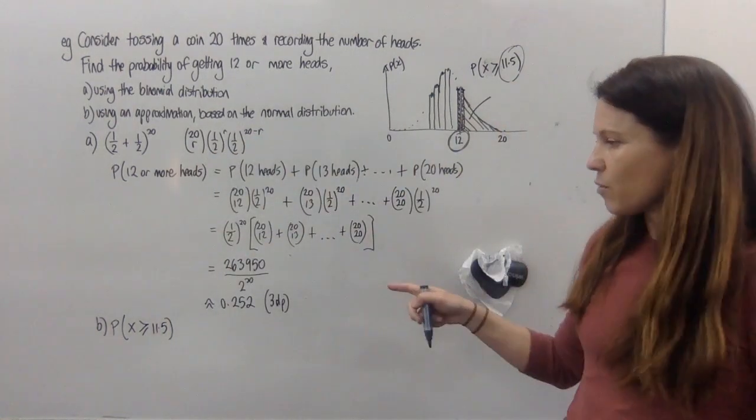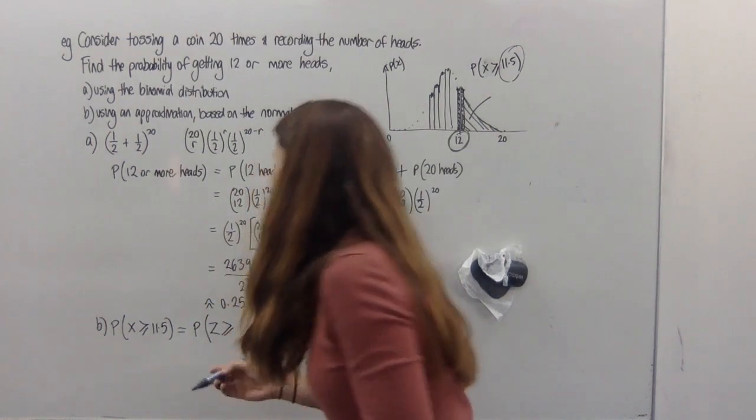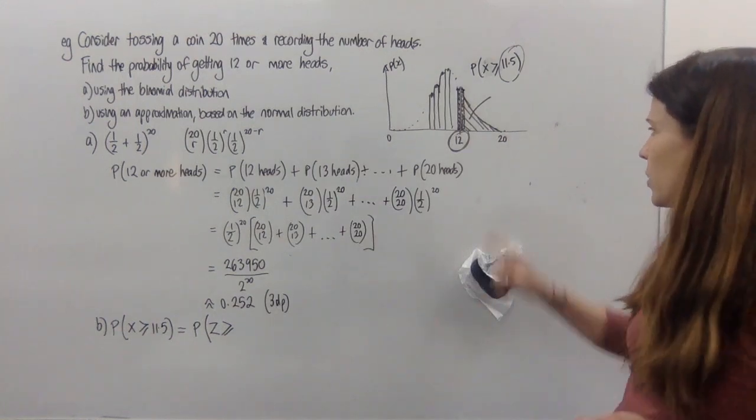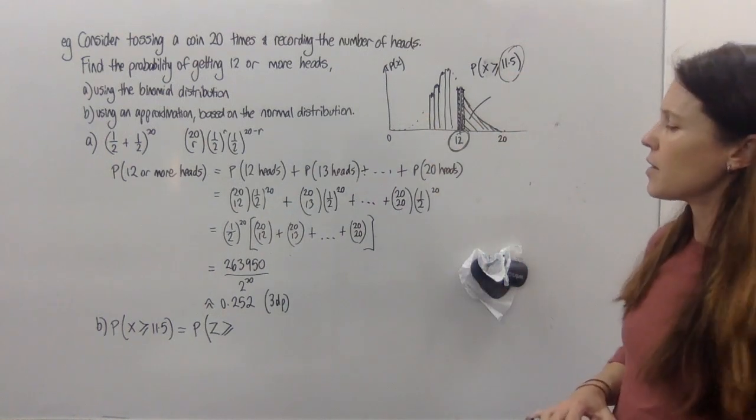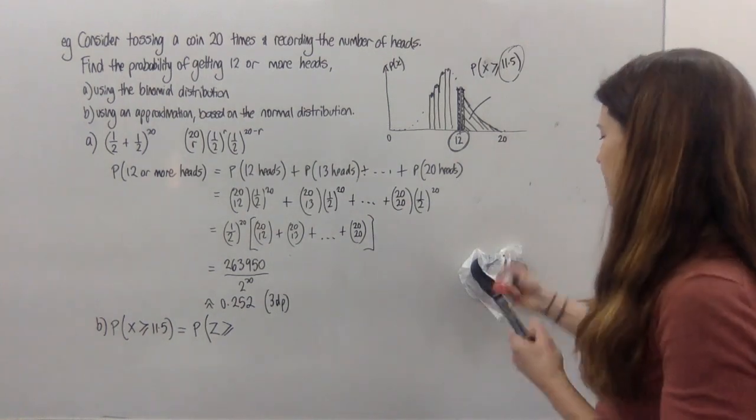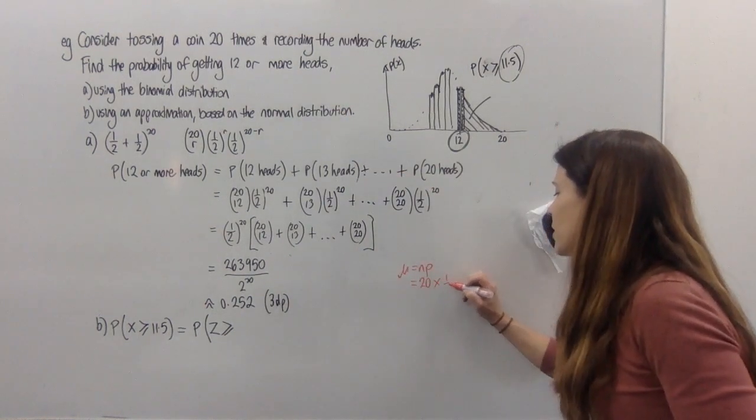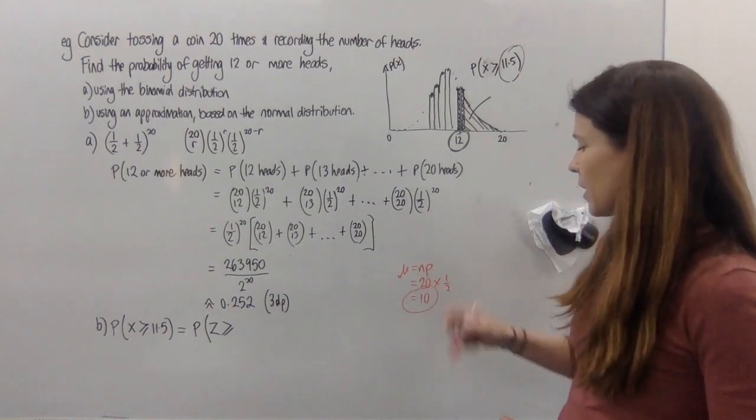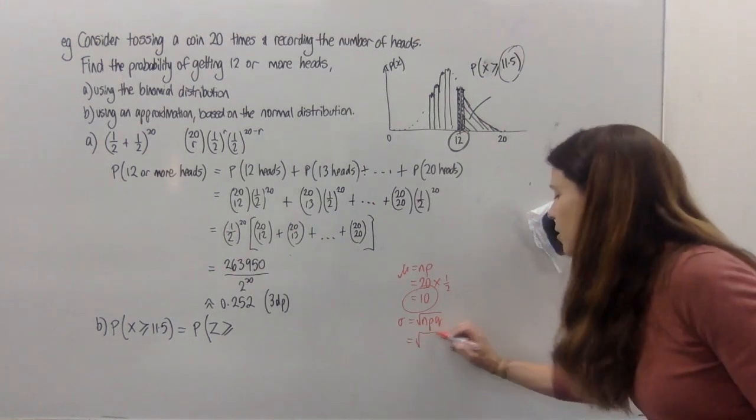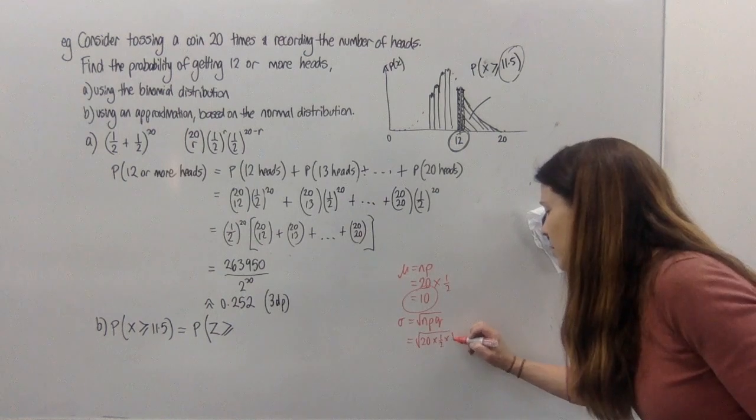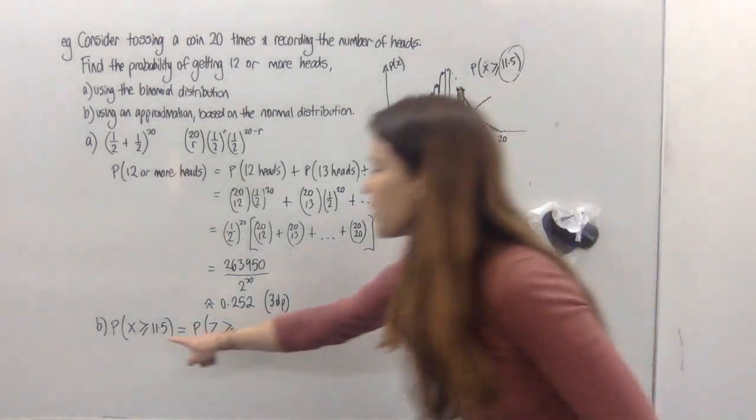So we're going to need to consider what 11.5 is as a Z score. So we want the probability that Z is greater than or equal to. Now, how do we find a Z score? We say how far above or below the mean is that? Now, what's the mean when we're looking at this experiment? Well, we can easily figure it out. Let's do it on the side. The mean is just n times p, which in this case is 20 times a half, which is 10. So we've got that. And then the standard deviation is the square root of npq, which in this case is the square root of 20 times a half times a half. So we've got a quarter of 20, which is 5. So it's going to be root 5.